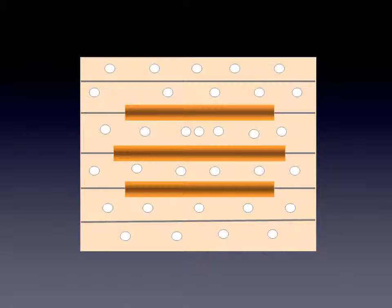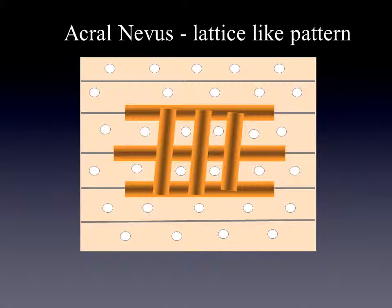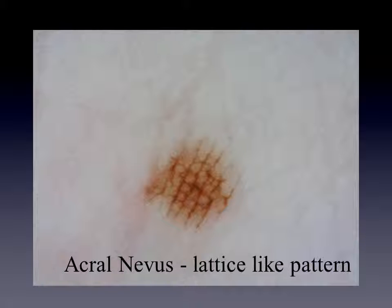The next type of acral nevus I want to show you is more or less a variation of the parallel furrow pattern. In this, we also find pigmentation crossing the ridges, and therefore it forms a lattice. This nevus is called an acral nevus with a lattice-like pattern. Here you see a beautiful example: pigmentation in the furrows, and then crossing pigmentation surrounding the sweat gland in the middle.